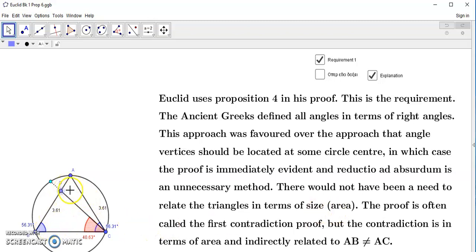Now, remember, this is what Euclid really proved directly in this proposition, is he showed that there's an absurdity because a smaller triangle can't have the same area as a larger triangle. In other words, triangle DBC can't have the same area as ABC. And this proof is often called the first contradiction proof, but the contradiction is in terms of the area and not directly related to AB equal to AC.